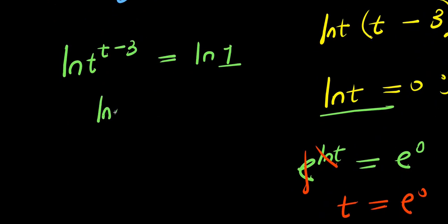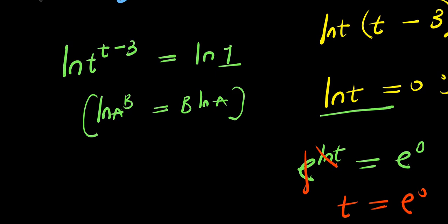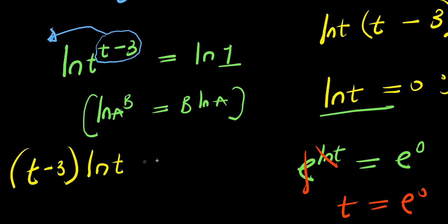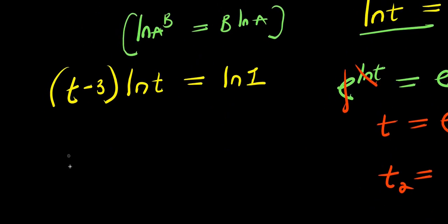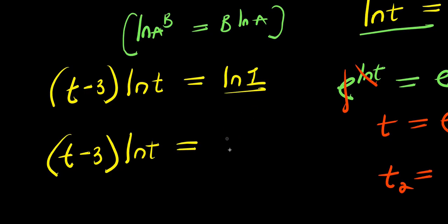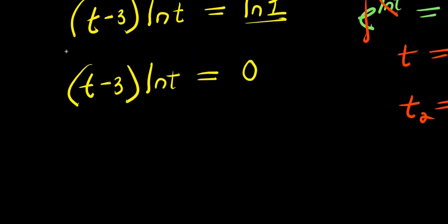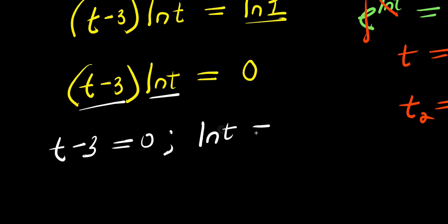Using the rule that ln of a to the power b equals b times ln of a, the (t minus 3) comes in front: (t minus 3) times natural log of t equals natural log of 1, which is zero. Equating each factor to zero: t minus 3 equals zero, and natural log of t equals zero.